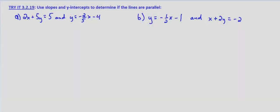Remember, if lines are parallel, they have the same slope. And if lines are perpendicular, they have slopes that are negative reciprocals or opposite reciprocals. The product of their slope is negative 1.